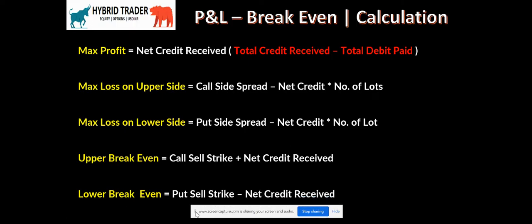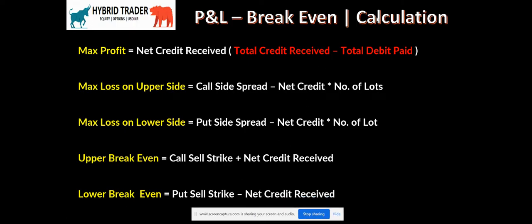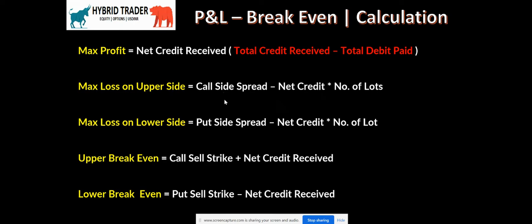Hi friends, I'm back with one more video. Today's topic is how to do the calculations for profit and loss and break-even for multiple option strategies like iron fly, iron condor, debit spread, straddle, and strangle. I've given the formula for maximum profit, max loss on the upper side, on the lower side, and how to get to the upper break-even and lower break-even.